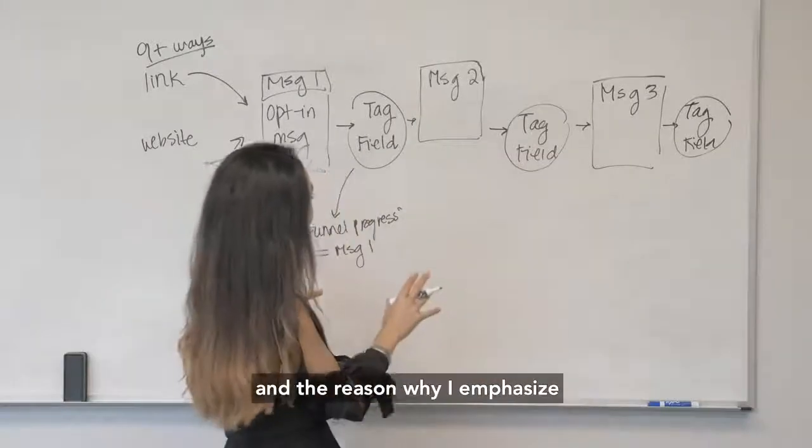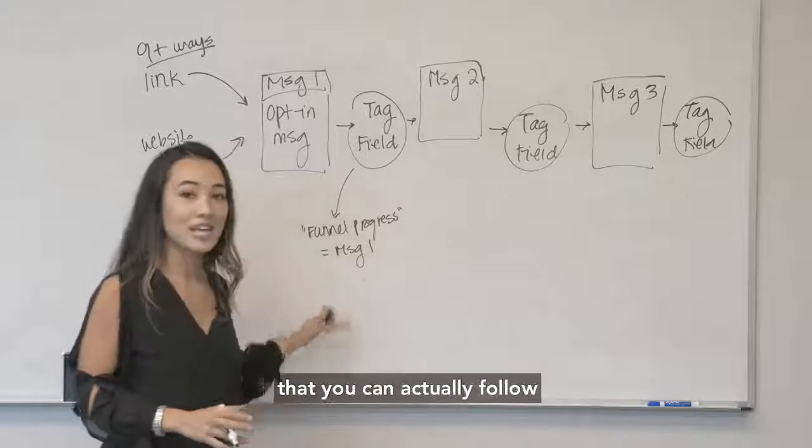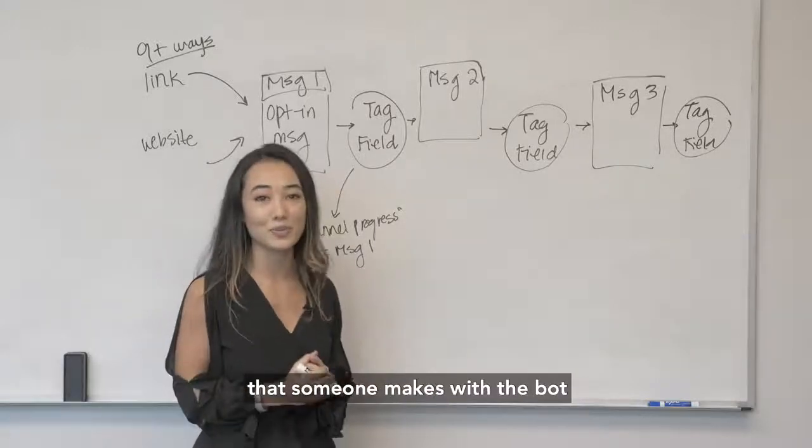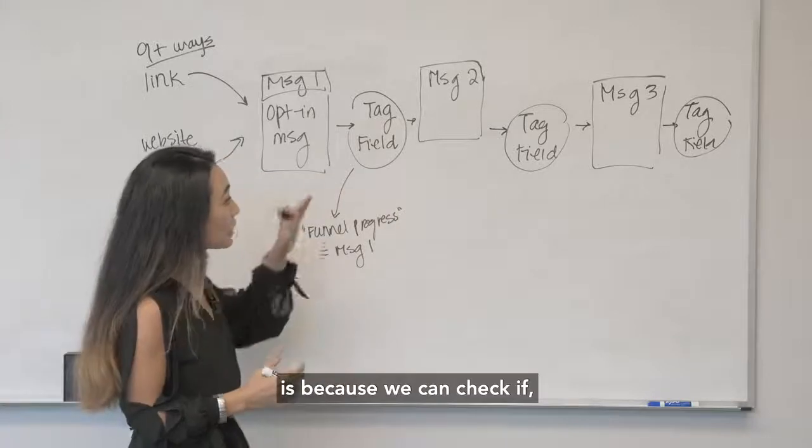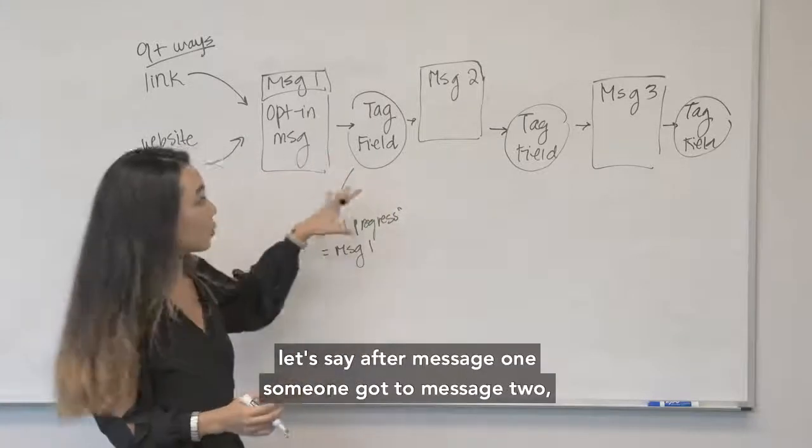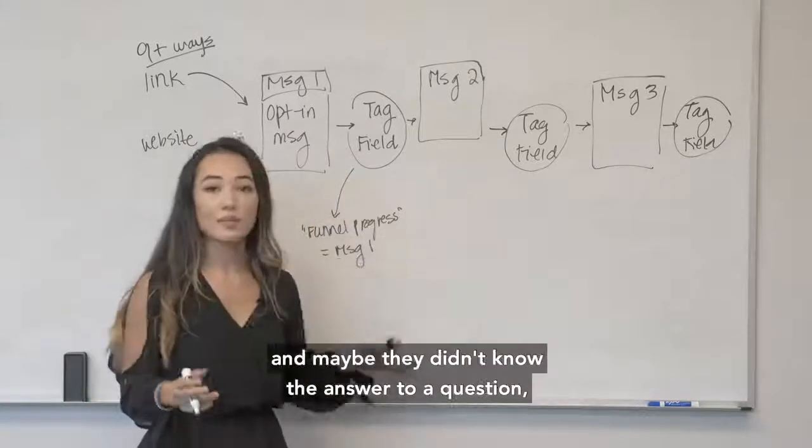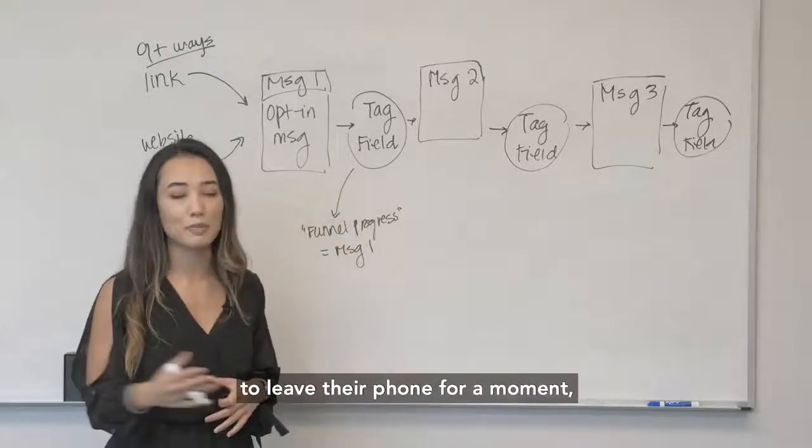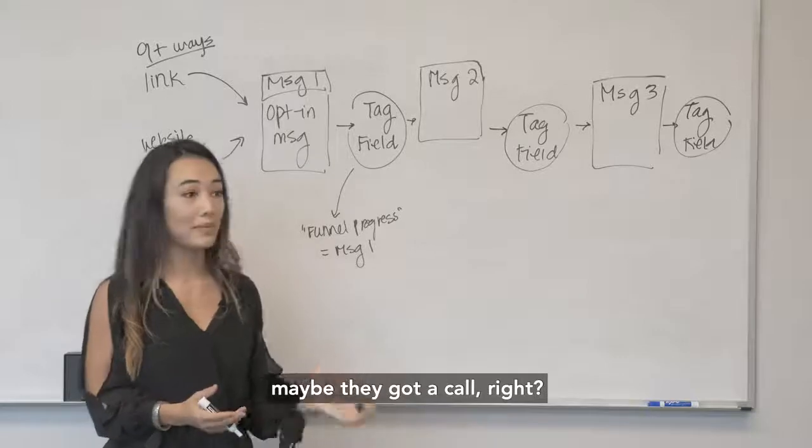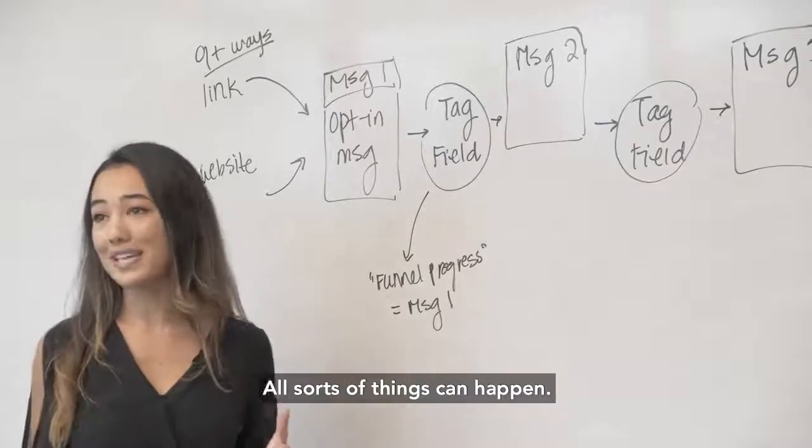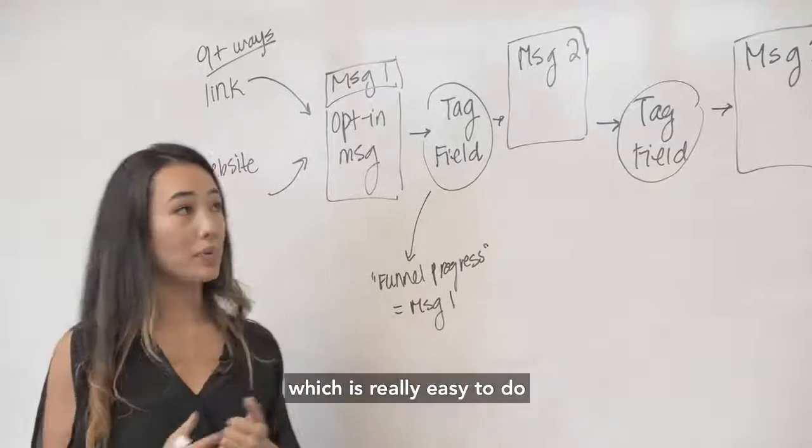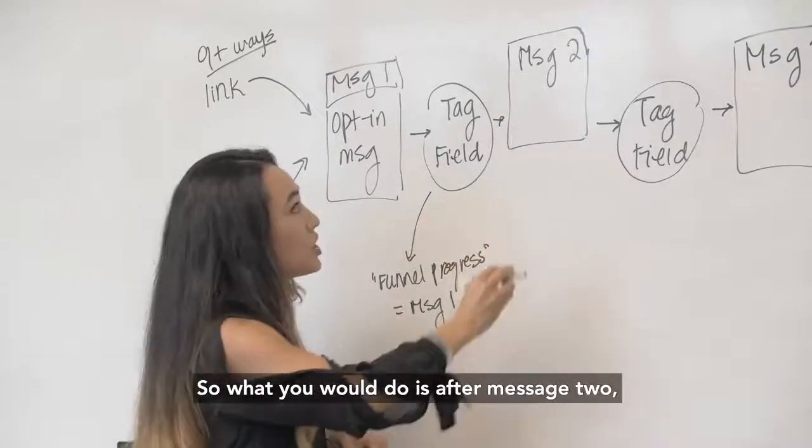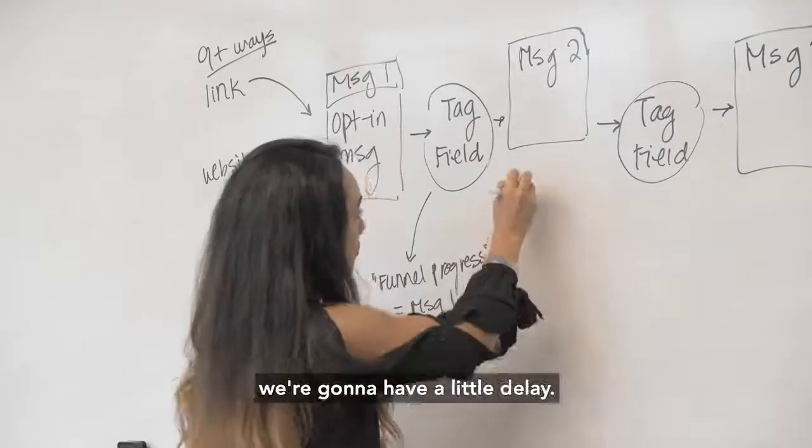Now the most important part about this whole thing, and the reason why I emphasize that you can actually follow and track every single interaction that someone makes with the bot, is because we can check if—let's say after message one—someone got to message two and maybe they didn't know the answer to a question, had to go get some information, maybe they got distracted, maybe they had to leave their phone for a moment, maybe they got a call. All sorts of things can happen and so we want to do a follow-up there, which is really easy to do because we've been tracking their progress.